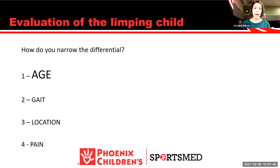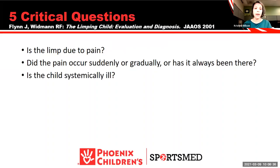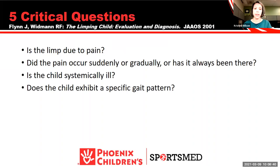When evaluating the limping child, the biggest thing is narrowing the differential. One of the best differentiators is age — I'll break it into three categories. Also important: the type of gait, location, and whether or not there is pain. Five critical questions: Is the limp due to pain? Did the pain occur suddenly, gradually, or has it always been there? Is the child systemically ill? Does the child exhibit a specific gait pattern? And can the pain be localized? The three age categories are toddlers (under 4), children (4–10), and adolescents (over 10).